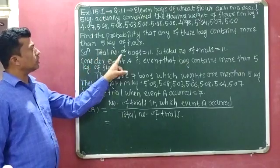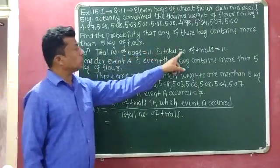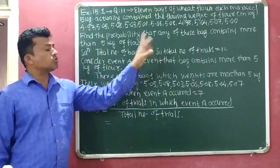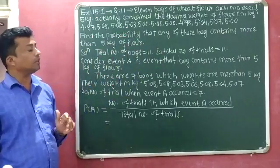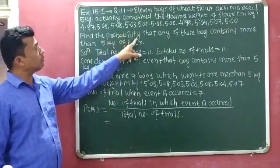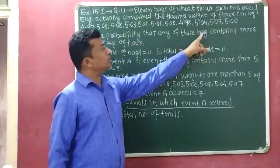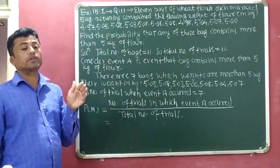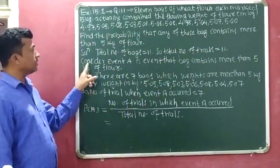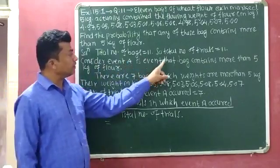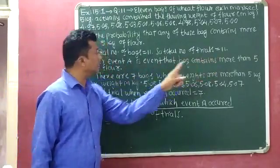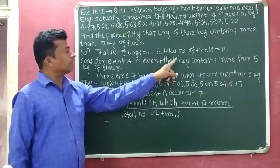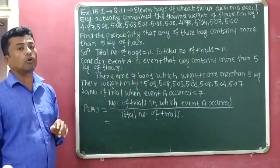Solution: total number of bags is equal to 11. We will consider event A as the event that a bag contains more than 5 kilograms of flour.